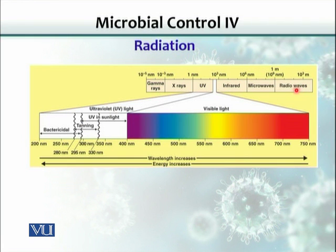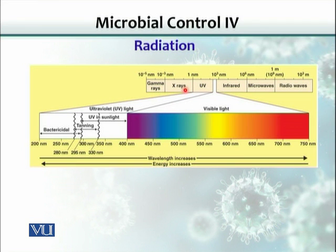Looking at the spectrum of radiation, visible light is what our eyes can detect. On one side, wavelengths are longer — infrared, microwave, and radio waves. On the other side, as we move toward shorter wavelengths, energy increases. This increase in energy changes the DNA of organisms — it basically mutates the DNA. UV light, as well as X-rays and gamma rays, mutate the genomic code so organisms are not able to replicate.